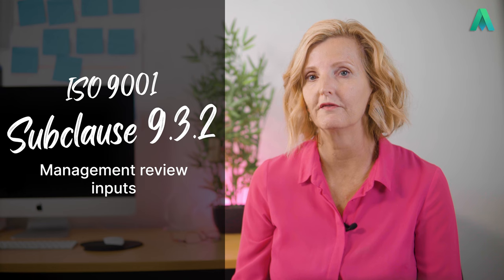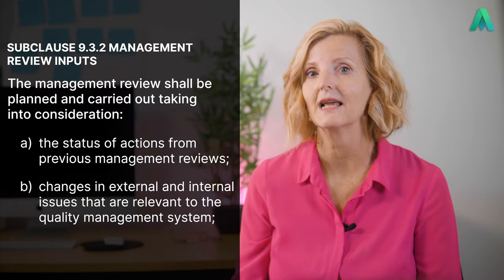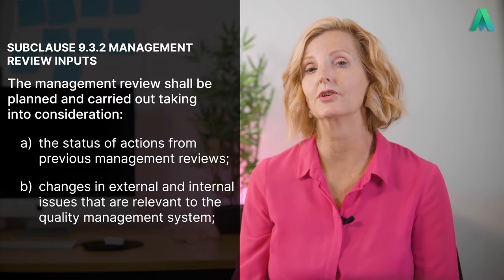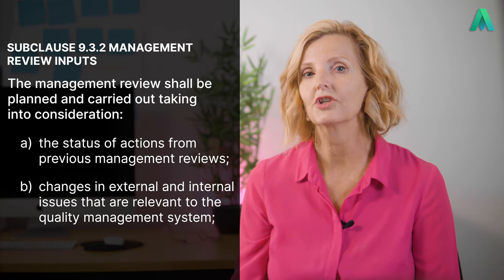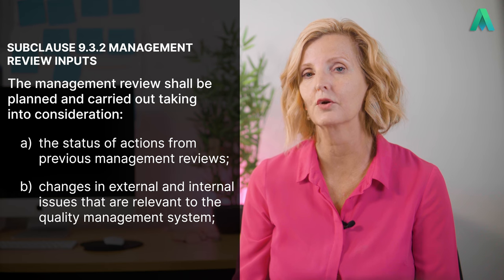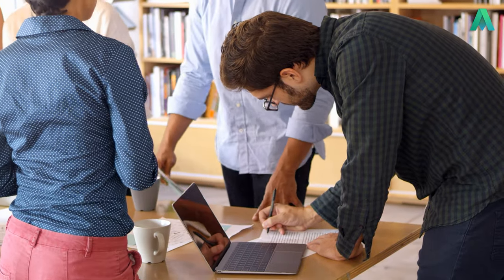We can now move on to the next sub clause, 9.3.2 Management Review Inputs. This sub clause states the management review shall be planned and carried out taking into consideration: (a) the status of actions from previous management reviews, and (b) changes in external and internal issues that are relevant to the quality management system. This means that each management review is not a single or silo event — previous review actions must feed into the next review. It's an ongoing process.